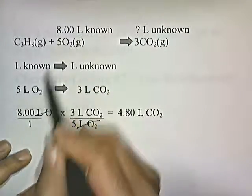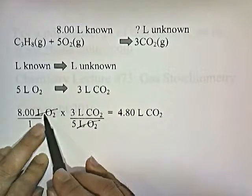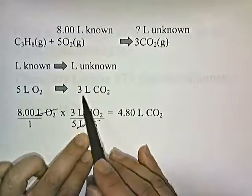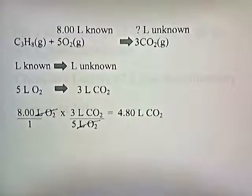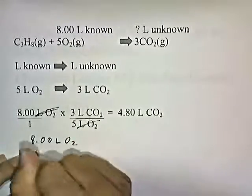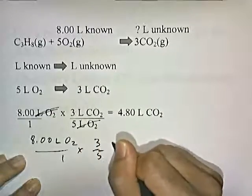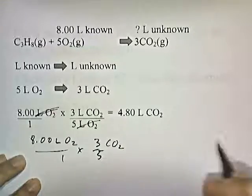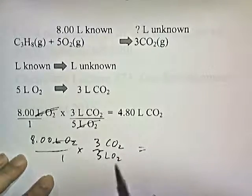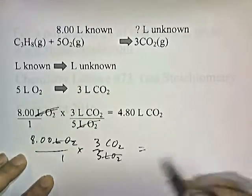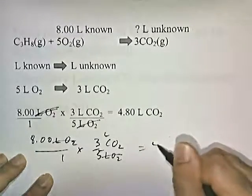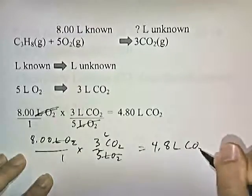We take 8 liters of O₂ over 1. We have liters of oxygen on top and want to get rid of it, so we put 5 liters of oxygen on the bottom and 3 liters of CO₂ on top. Liters of O₂ cancel and we're left with liters of CO₂. 8 times 3 divided by 5 gives us 4.8 liters of CO₂ gas.